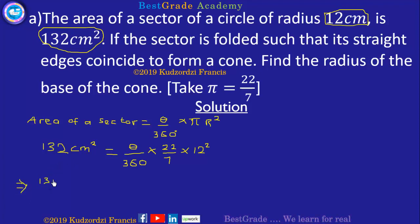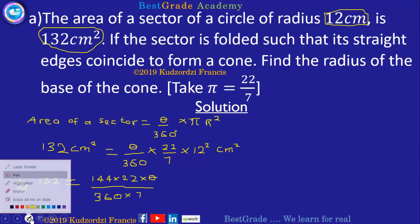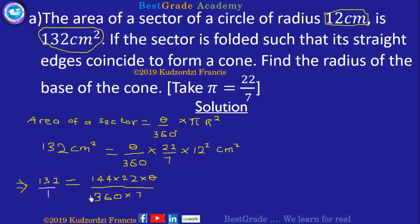This implies 132 is equal to 144 (since 12 squared gives 144) times 22 times theta, all over 360 times 7. We want to solve for theta, the angle of the sector. So we have 132 over 1 equals this expression, and we cross multiply to obtain the equation.